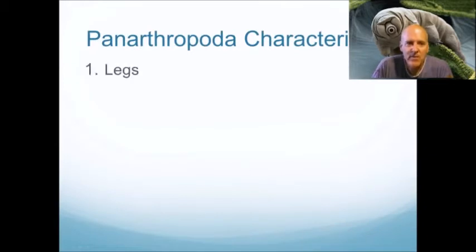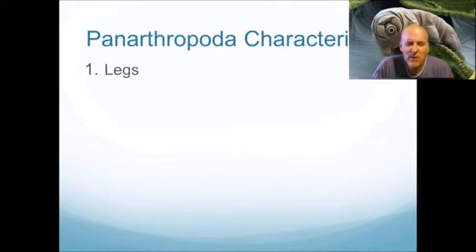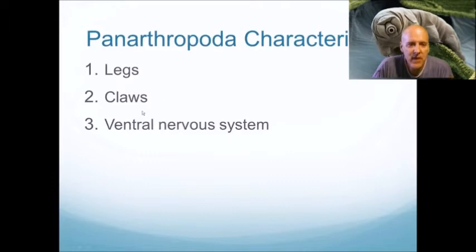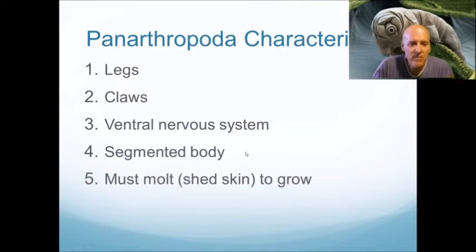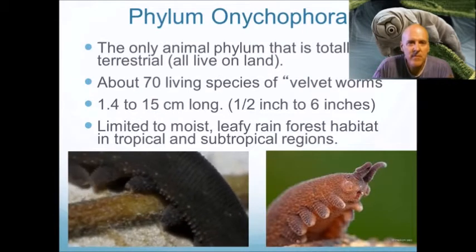Characteristics shared by all Pan Arthropoda: they all have legs — not jointed legs, since only the arthropods have jointed legs, but they all have legs, which is very different from anything else we've talked about. They have claws on these legs, a ventral nervous system with main nerve cords running along the belly, a segmented body like annelids, and they all must molt — shed their skin — in order to grow.